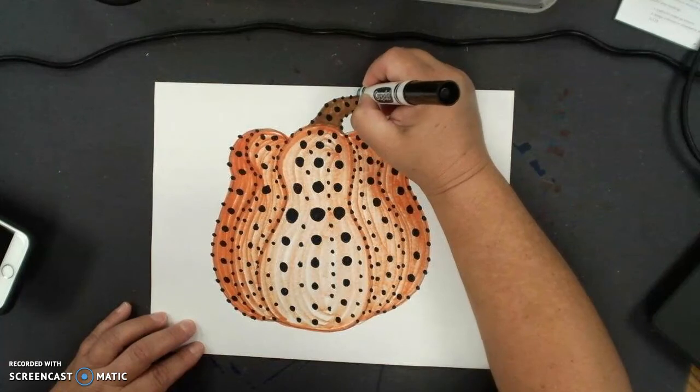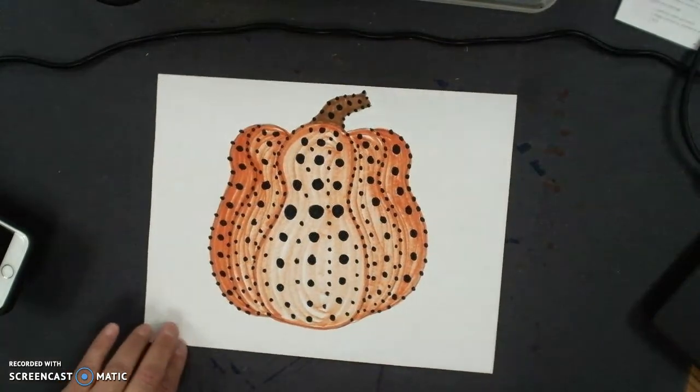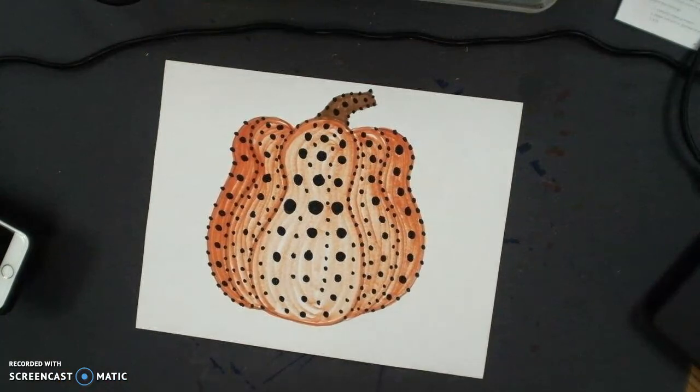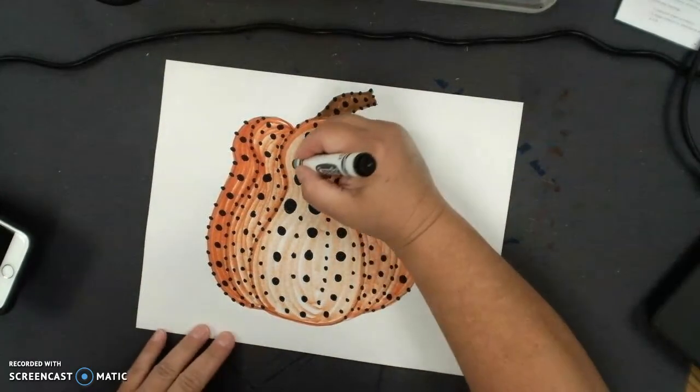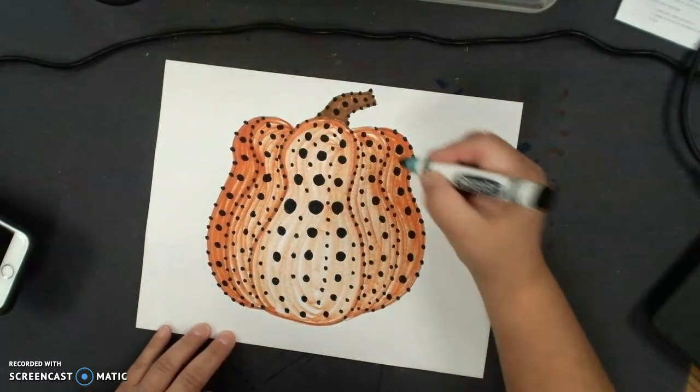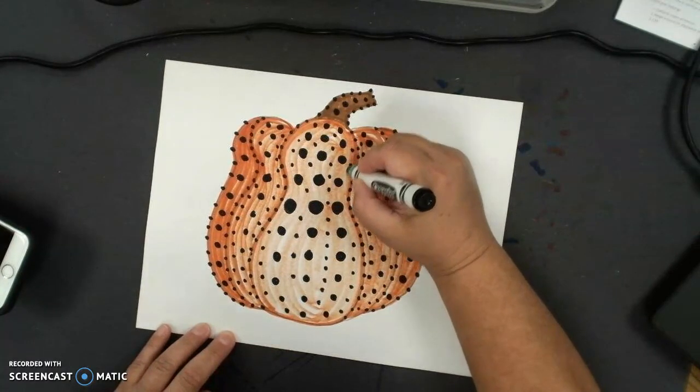She is still alive today, which I know that's a question you guys often ask me, is the artist still alive? Well she is. She lives in that mental institution in Japan for the problems that she has with her obsessive compulsive behaviors and some of the other things, which is probably why her style is so controlled like this. This is just a way that she can control her thoughts and meditate on what she's doing as she's creating her picture.